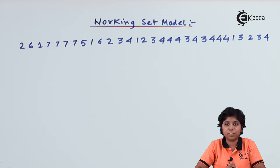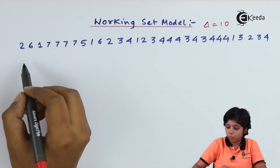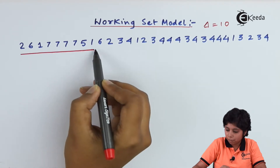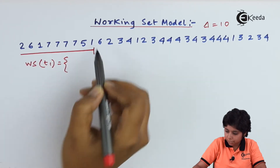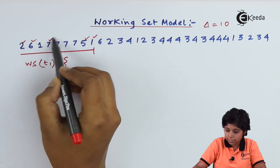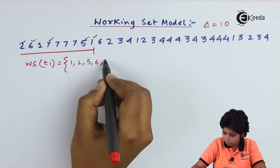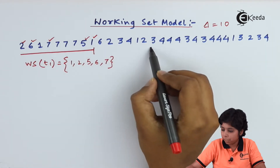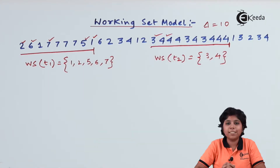Depending on this working set, pages that are actively used are distinguished from pages not currently being used. If a page is not used for a long time, it will be dropped from the working set, giving a new page the chance to enter. Now we will see how the working set works with a page reference example. Suppose we have delta equals 10. At time t1, the working set ws(t1) contains pages 1, 2, 5, 6, and 7, and others are just repetitions.